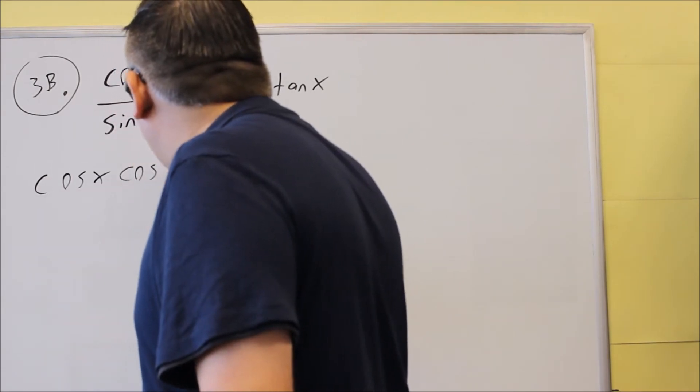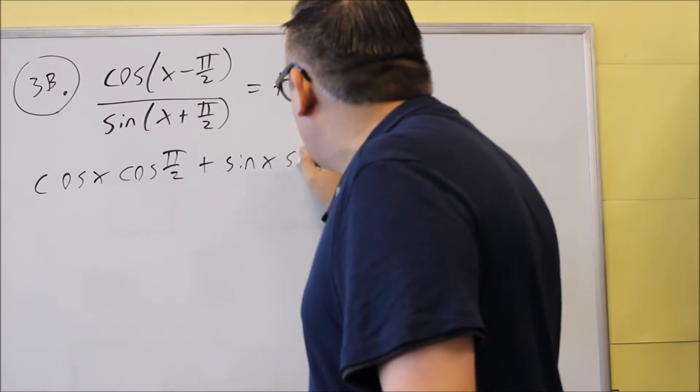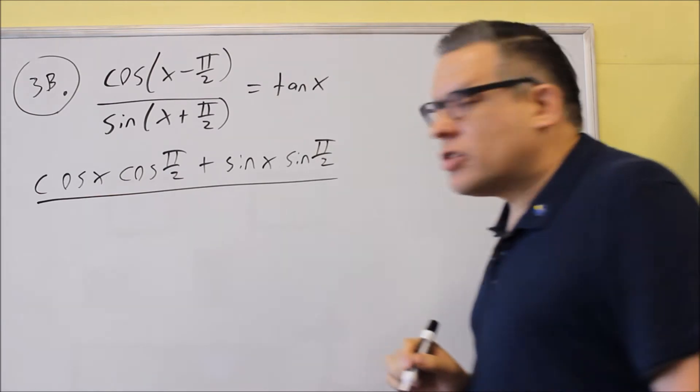Cosine x cosine pi over 2, plus sine x sine pi over 2. So we do that, we start with that one.